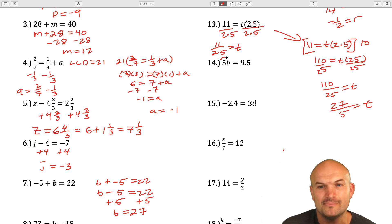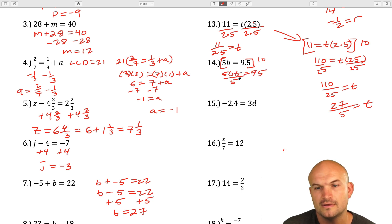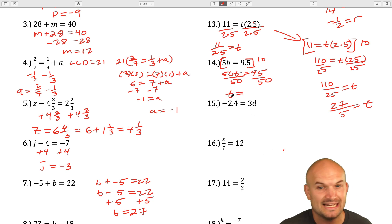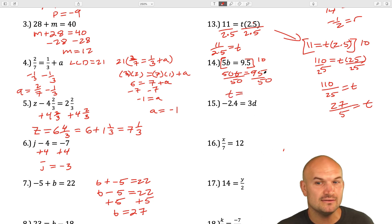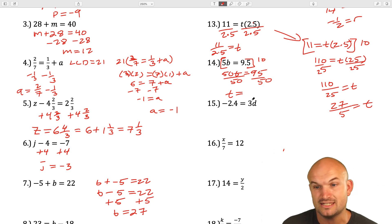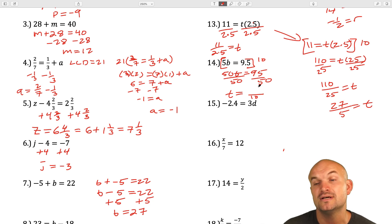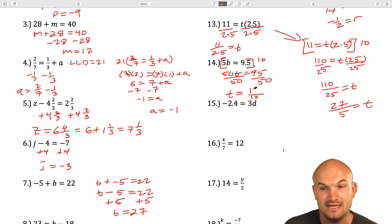For the next decimal example, I'm going to multiply by 10 to get rid of the decimal. Dividing by 10 here, I get 50b equals 95. Dividing by 50 on both sides: 5 goes into 50 ten times, and 5 goes into 95 nineteen times. So b is going to equal 19 over 10.